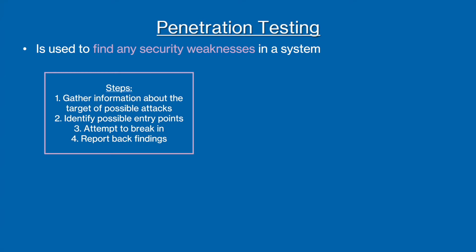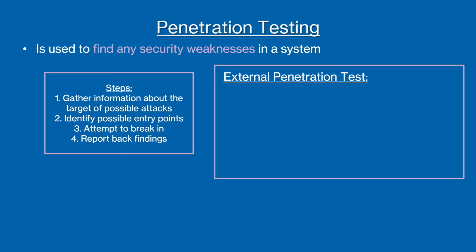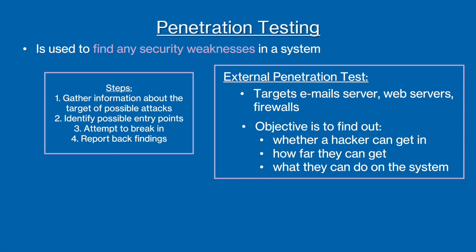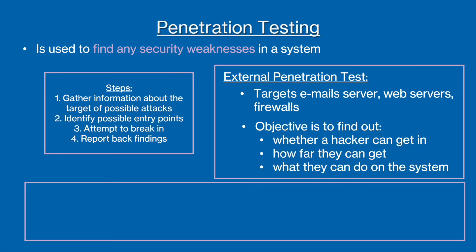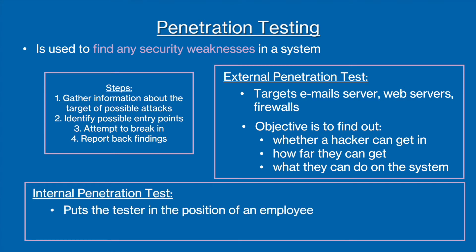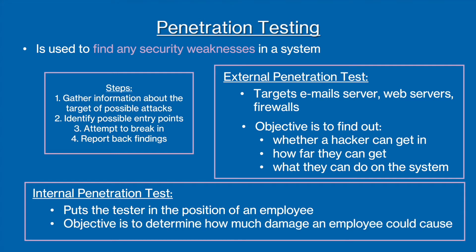There are two methods of penetration testing. The first is called external penetration testing, where the tester is put in the position of a hacker to spot potential threats. The second type is internal penetration testing, where the tester is put in the position of an employee to see how much damage can be made by a disgruntled or dishonest employee.